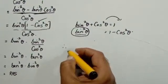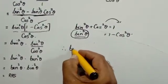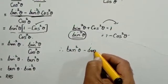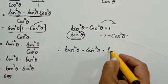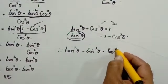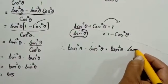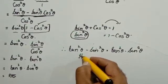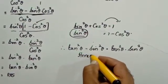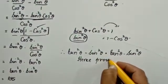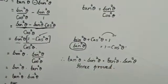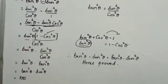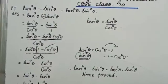Therefore, my final conclusion is: tan squared theta minus sin squared theta is equal to tan squared theta into sin squared theta. This is my final verdict — hence proved. This is how you prove tan squared theta minus sin squared theta equals tan squared theta into sin squared theta.